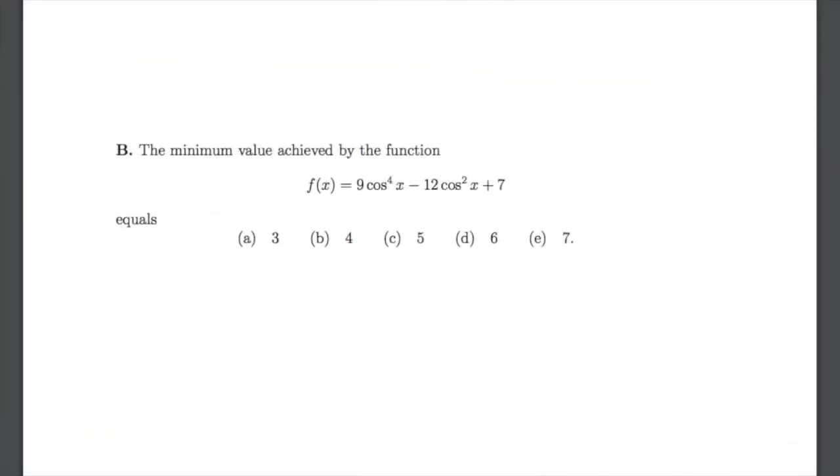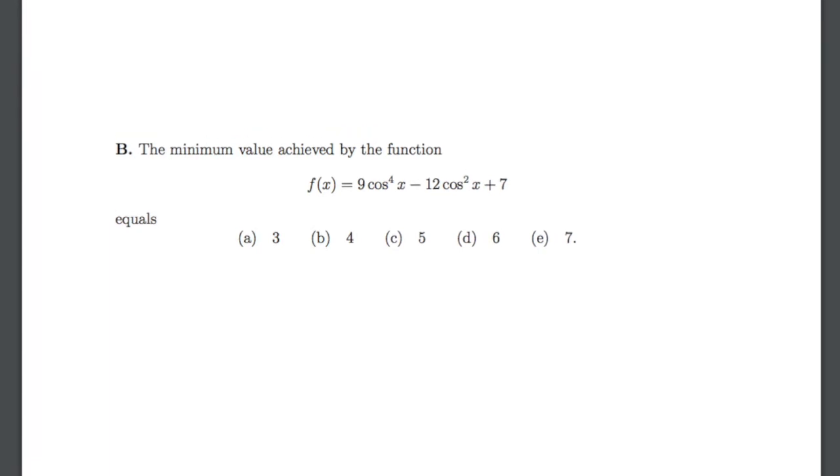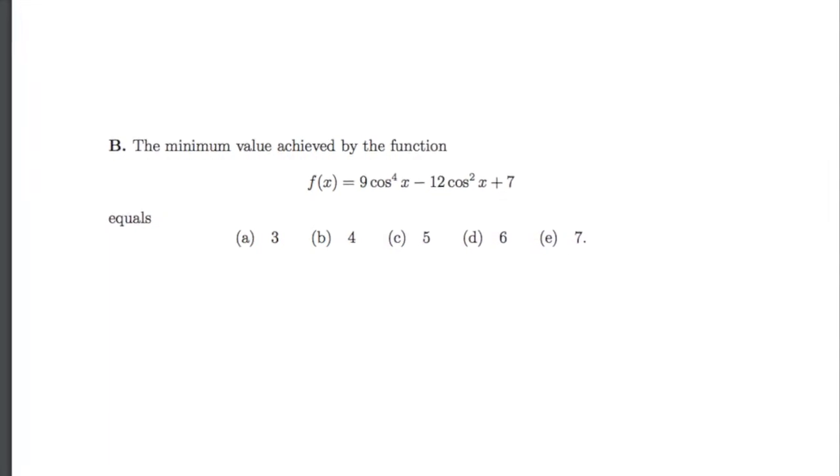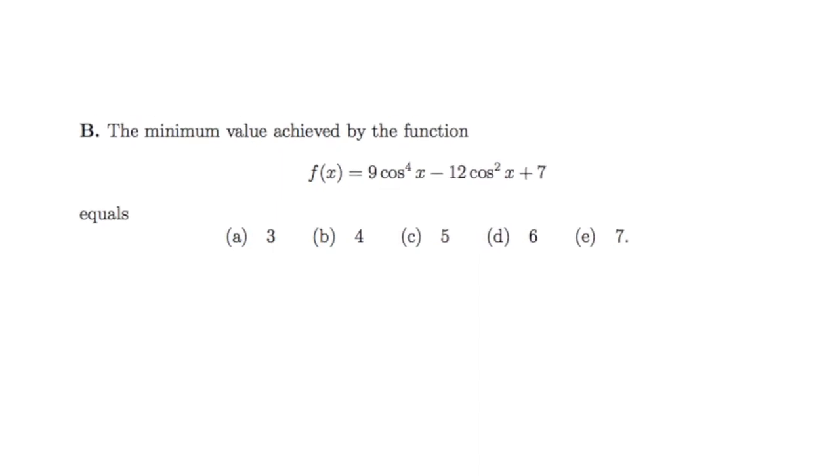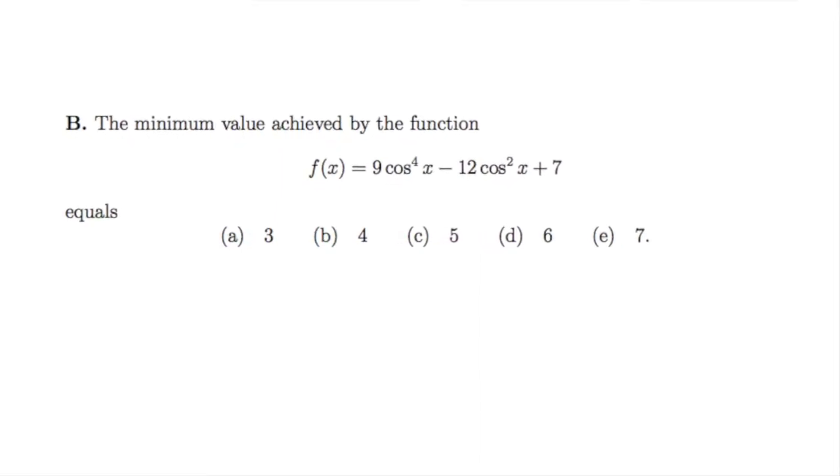In this video, we're going to have a look at question 1b from the 2017 MAT exam. It is asking, what is the minimum value attained by the function f of x equals 9 cosine to the fourth power of x minus 12 cosine squared of x plus 7? And we're given five possible answers.